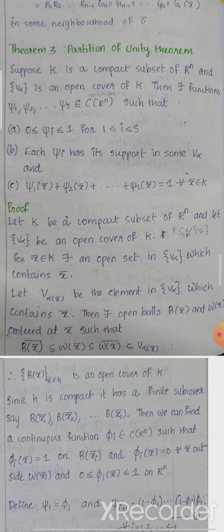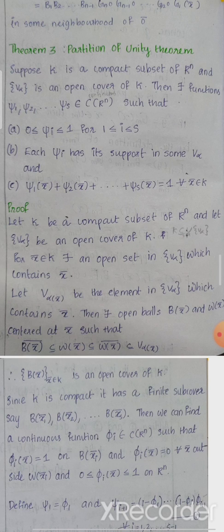The statement of the theorem is as follows. Suppose K is a compact subset of R^n and the collection V_alpha is an open cover of K. Then there exist functions psi_1, psi_2, ..., psi_s belonging to C(R^n) such that: (a) 0 ≤ psi_i ≤ 1 for 1 ≤ i ≤ s; (b) each psi_i has its support in some V_alpha; and (c) psi_1(x̄) + psi_2(x̄) + ... + psi_s(x̄) = 1 for all x̄ belonging to K.